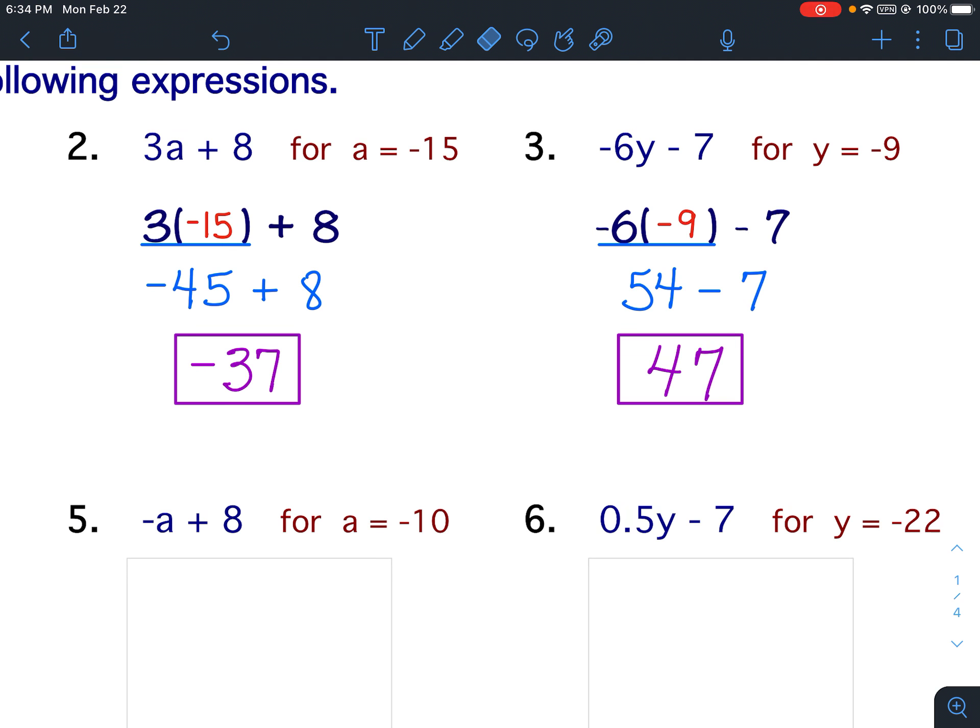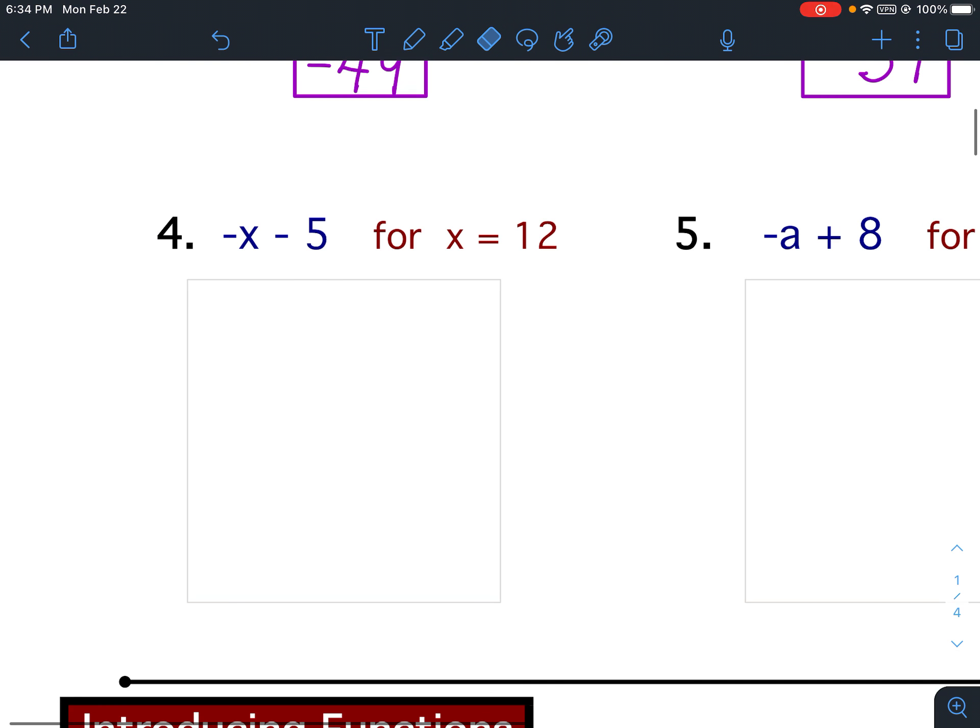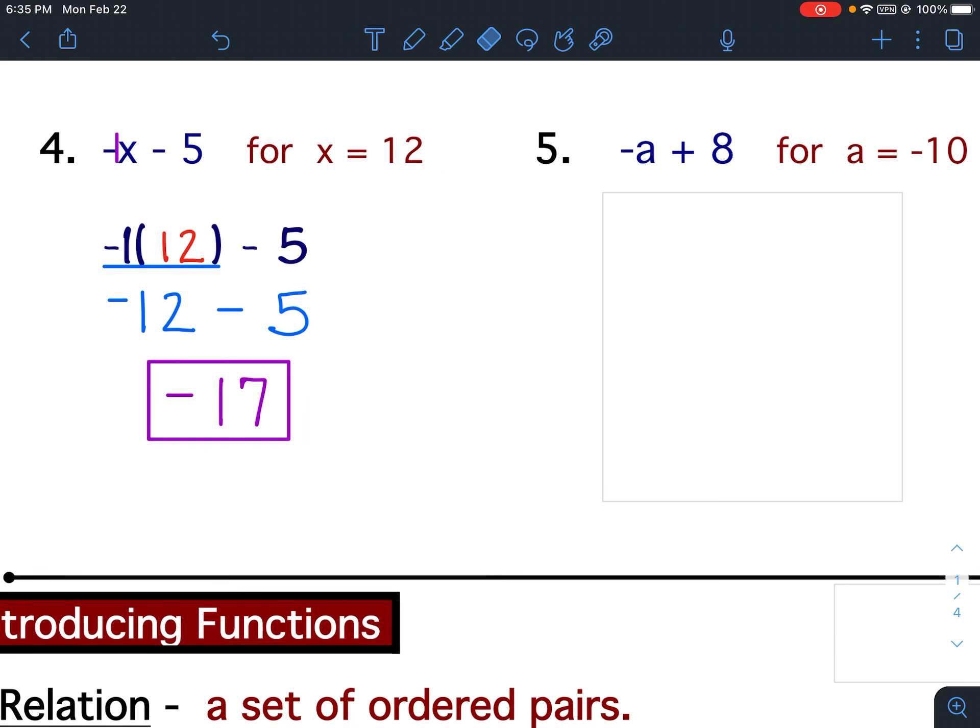If you need to, pause your video. Make sure you get that all written down. If you made any mistakes, please fix it. Number 4. Number 4 and 5 are a little bit different. Notice that negative sign in front of the x. That's like having a negative 1 in front of the x. Therefore, you should have put a negative 1 in front of the parentheses. So I'm going to take the opposite of the variable. So the opposite of positive 12 is negative 12. Negative 12 minus 5 is negative 15. 4 and 5 are the most missed problems.